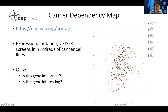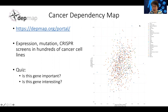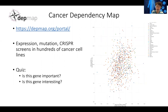Is this gene important? Yes, this gene is very important, because if you knock out the gene, the cells are dying — there is negative selection on the gene across hundreds of cell lines. If you knock out this gene, the cell dies.